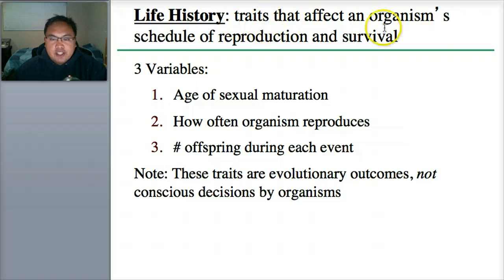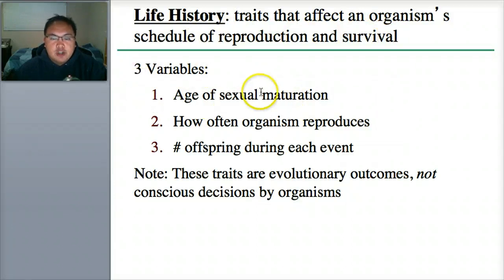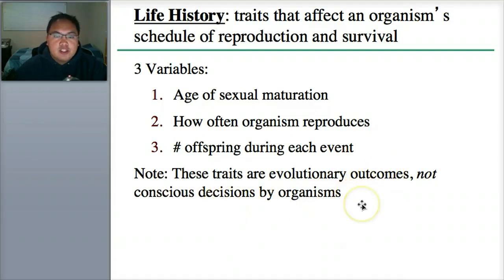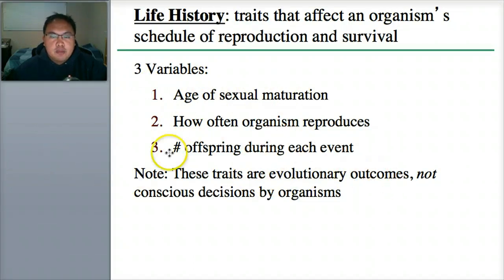Another thing we can talk about is life history — the traits that affect an organism's schedule of reproduction and survival. We've talked about this being fitness, reproduction, and the ability to survive. The three variables are: the age of sexual maturation, how often it reproduces, and how many offspring they have during each event. These traits are evolutionary outcomes, not conscious decisions by organisms.